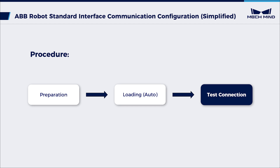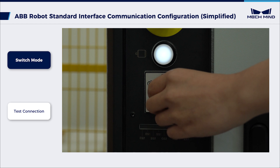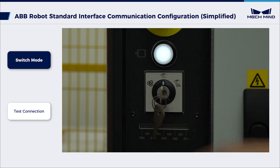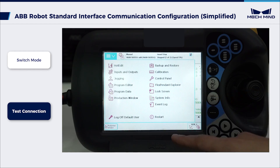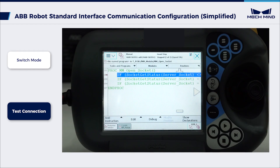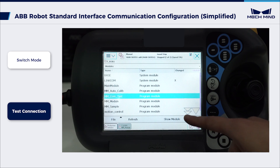After the autoload process succeeds, run the program to test the connection between the Vision System and the robot. Switch the key in the controller to the manual mode. On the Teach pendant, select the MMCOM test module and tap Show Module.